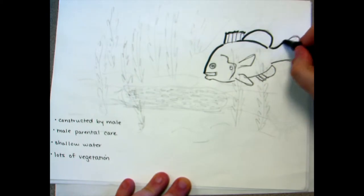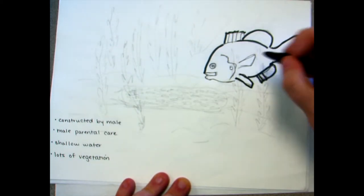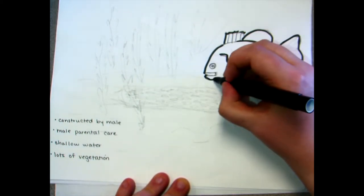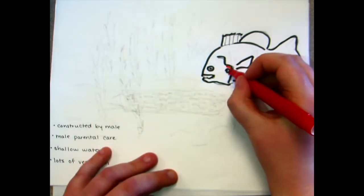Pumpkin seed usually spawn from late spring to early summer when water temperatures are between 15 and 25 degrees Celsius. Males construct saucer-shaped nests made of sand or gravel in shallow water surrounded by submerged vegetation.